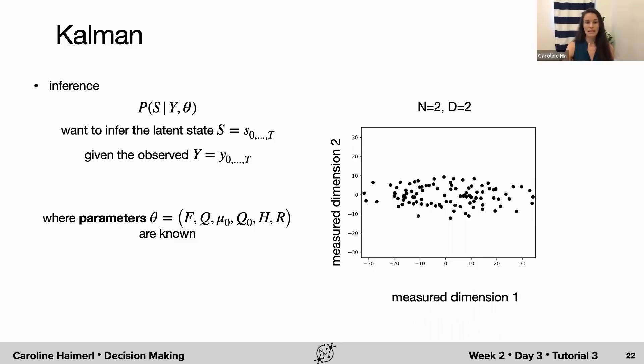When we do inference, we expect that our parameters summarized by theta are simply given or known. We do not worry about them yet. The inference can be done in two steps.